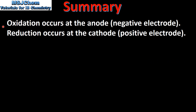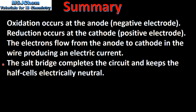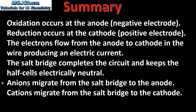In summary, in a voltaic cell oxidation occurs at the anode, which is the negative electrode, and reduction occurs at the cathode, which is the positive electrode. The electrons flow from the anode to the cathode in the wire, producing an electric current. The salt bridge completes the circuit and keeps the half cells electrically neutral. Anions migrate from the salt bridge to the anode and cations migrate from the salt bridge to the cathode.